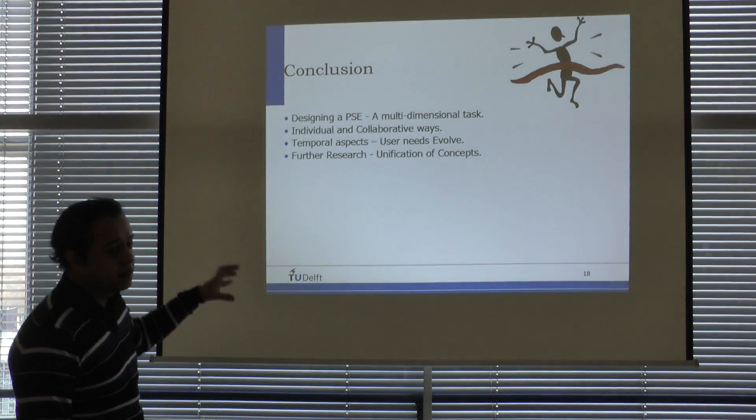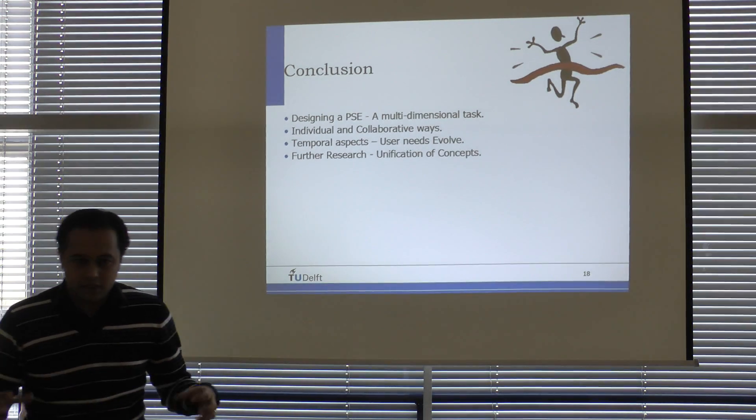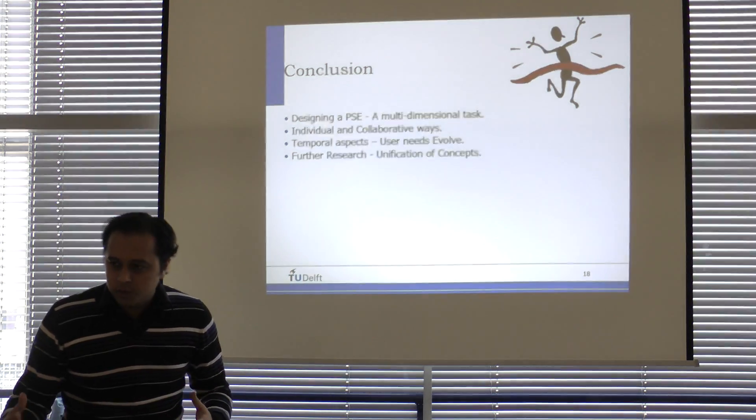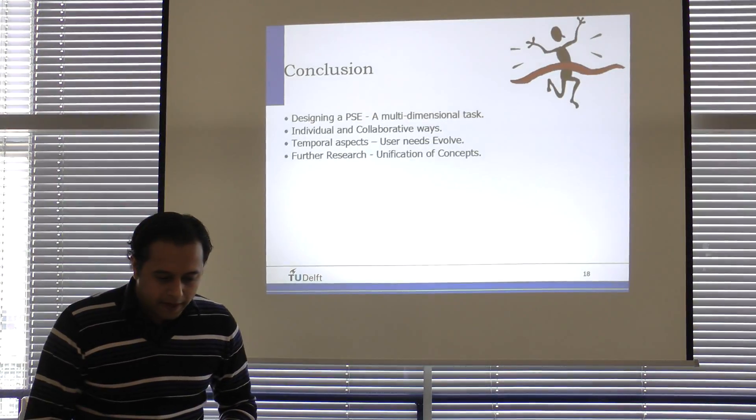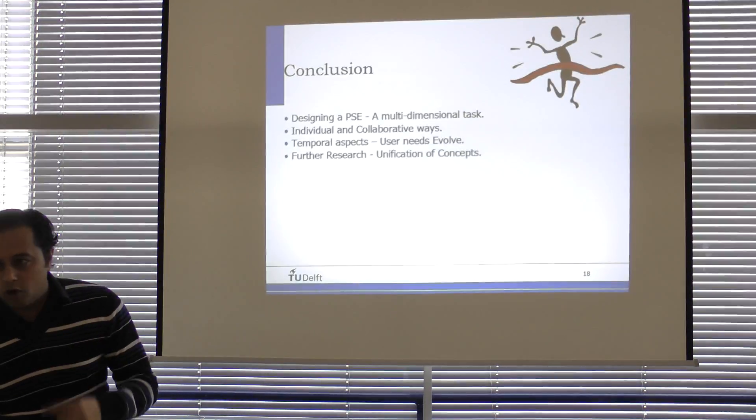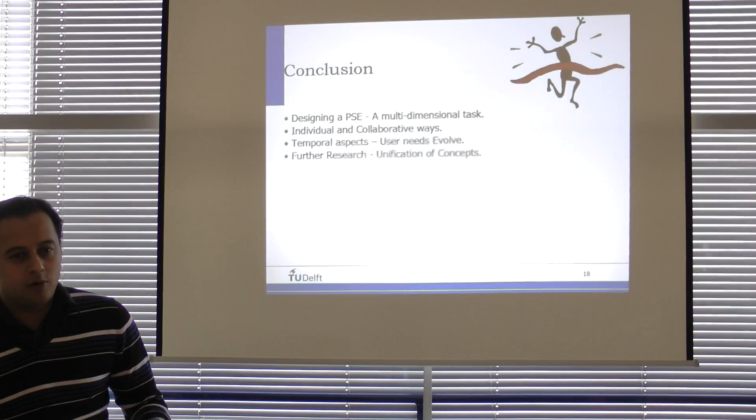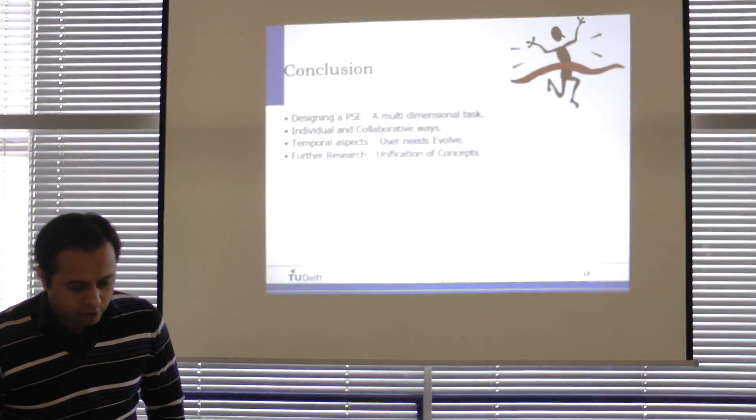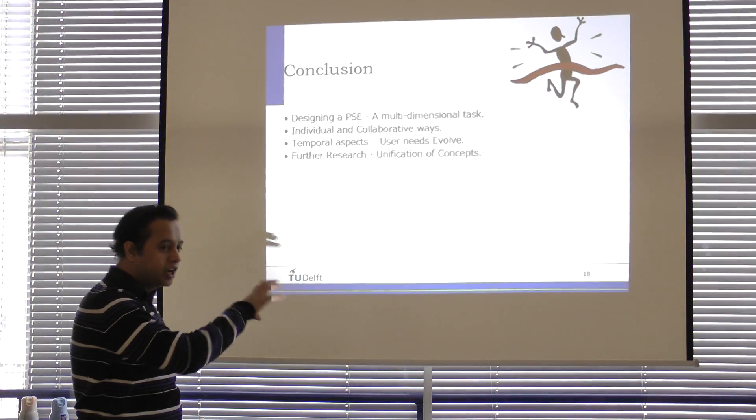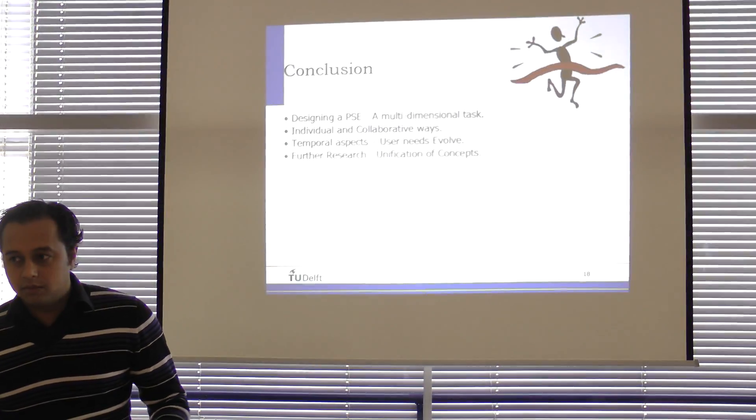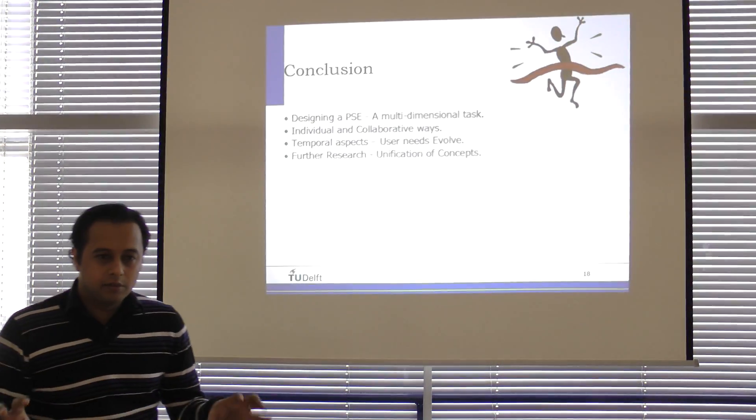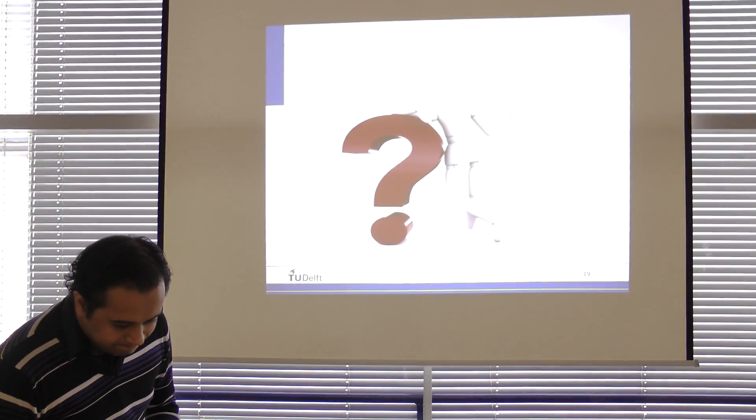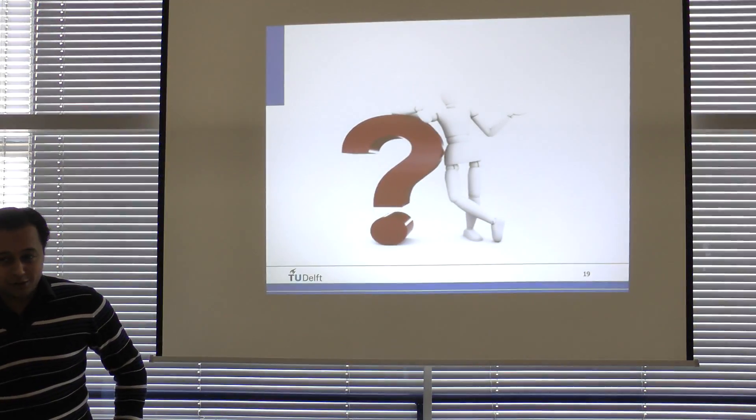Conclusion, the design of a personal search engine has to be multi-dimensional tasks, so a lot of different research has to be done in different fields, and then they have to be combined. They have to be both individual and collaborative ways, because our context is not just personal, we are in different groups, we express ourselves in different social groups. Temporal aspects are very important, because users keep evolving, their needs keep changing, so any model that you make today has to take care of what happens to the users tomorrow, and how the system evolves with time. And for the research, my only suggestion, apart from all the work that I mentioned is happening, is that there has to be something about unification of all these concepts, and the different things happening in different areas, a lot of sub-research happening, but if you want to make a real personal search engine, that's really one solution for all, then you have to also have research on how to unify all those concepts, and take the best to do that. Thank you.